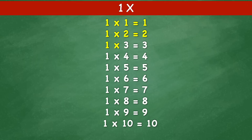1 times 3 equals 3. 1 times 4 equals 4. 1 times 5 equals 5. 1 times 6 equals 6. 1 times 7 equals 7.